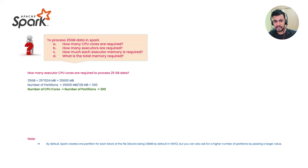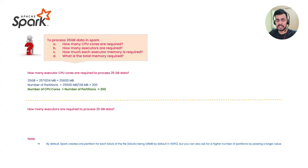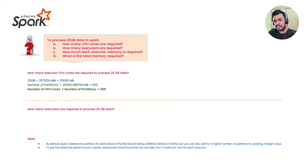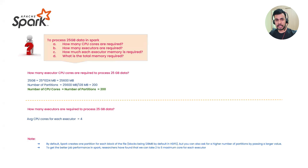Great — that first question is easy. Now moving on to the next question: how many executors are required to process 25GB? This is interesting. According to Spark research, the recommended number of CPU cores per executor is two to five for better performance. I'll go with four as the average — not the maximum, not the minimum.